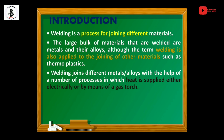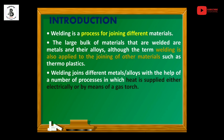Welding joins different metals or alloys with the help of a number of processes in which heat is supplied either electrically or by means of a gas torch. In the welding process, you can use arc welding or a different kind of torch that generates different kinds of gases.